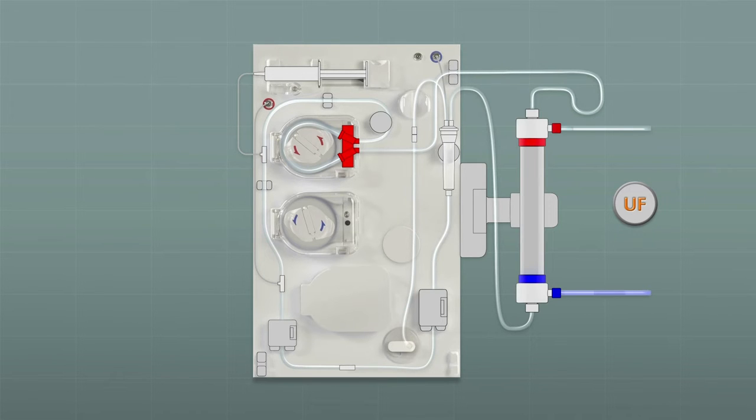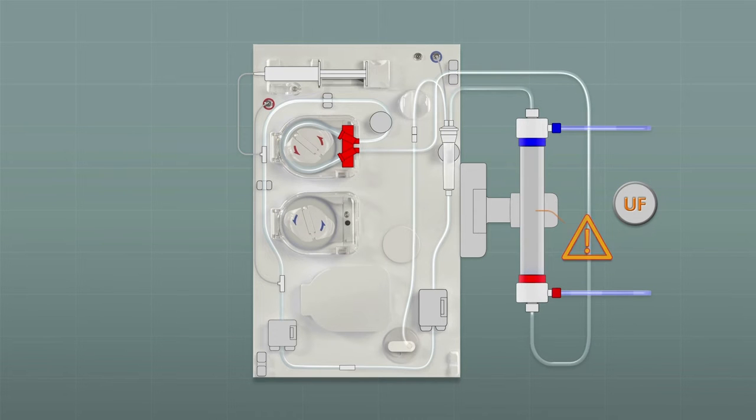First the dialysate compartment of the dialyser is filled with dialysate. Then the dialyser is turned with the blue side up. The dialyser leak check is performed.